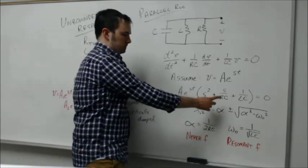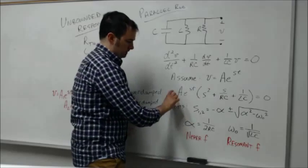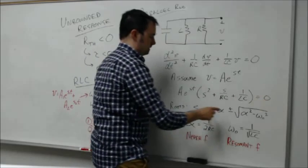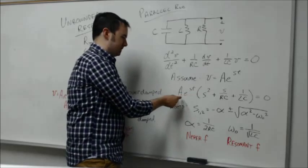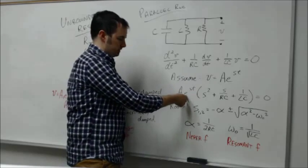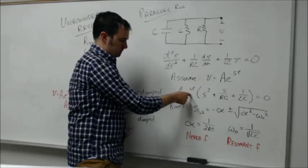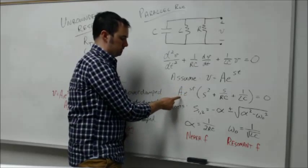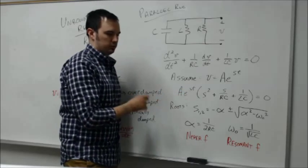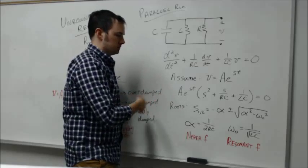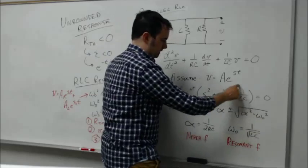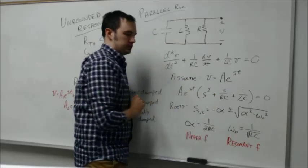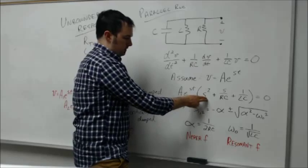For this equation to work out, we could say that this exponential term could be equal to zero, but then that would mean A has to be equal to zero because this is a positive exponential here. That's not really a practical solution because that just means there's no response at all. What we're really looking for is to get the expression in the parenthesis equal to zero, so we find the roots.